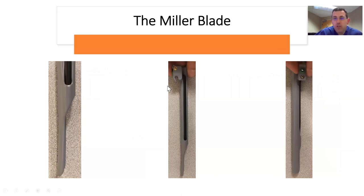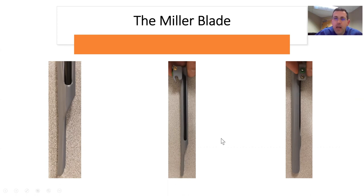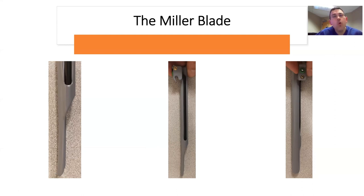Next is the Miller blade. It's relatively straight — there's just a gentle uptick, a little lip at the tip. Because it's not truly straight, you don't put this blade into the vallecula. You put this blade a little deeper and you actually clip the upper glottis. This will become clear when we go over the anatomy.